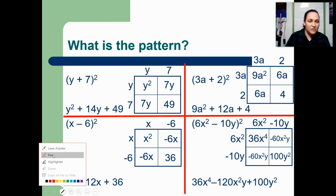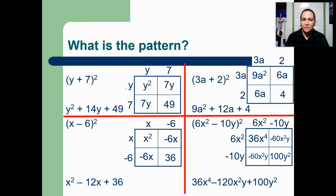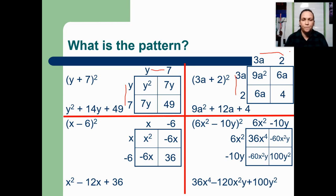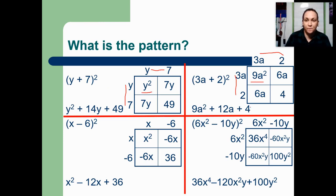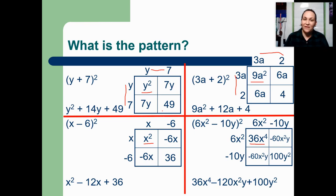In these problems, because it was being squared, I wrote the same thing on the side of every box. So this was a y plus 7, and this is also a y plus 7. I have a 3a plus 2 and another 3a plus 2. So if you're going to use the box method, make sure that the sides of the box are identical. Inside the box, every single first term is a perfect square — it's just the first number from the parentheses squared. So y squared; 3a squared where 3 squared is 9 and a squared is a squared; 6 squared is 36; and x squared squared is x to the 4th.